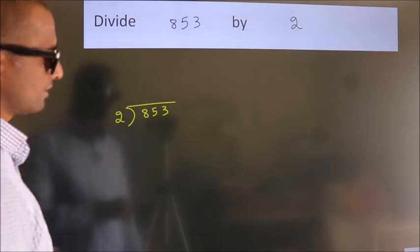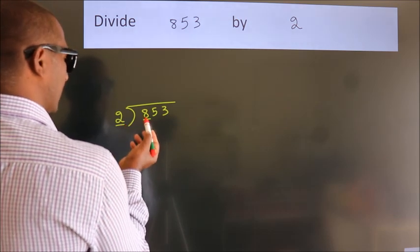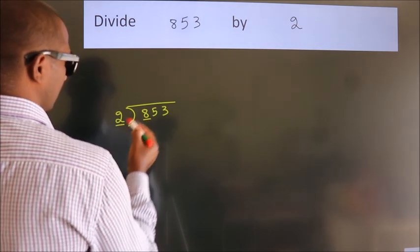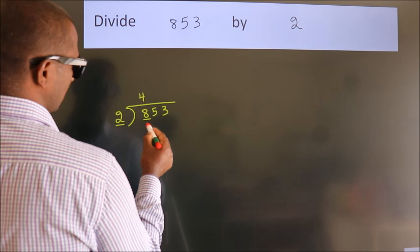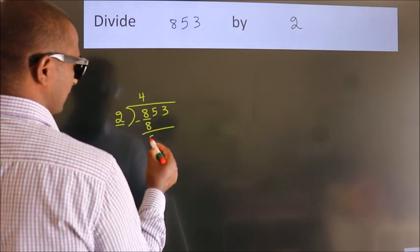Next. Here we have 8, here 2. When do we get 8? In 2 table. 2 4s 8. Now we should subtract. We get 0.